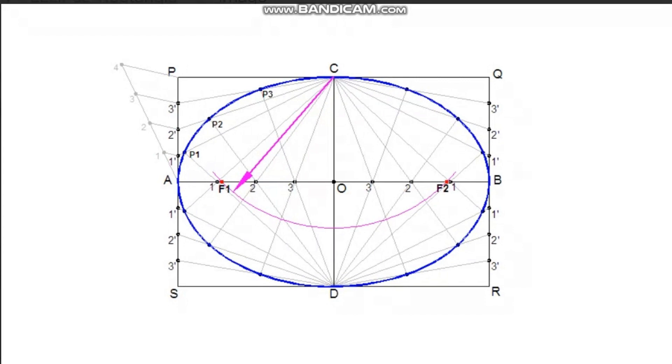Join these points to the point through which the tangent and normal is to be drawn. Draw a bisector line for this angle. This line is normal. A perpendicular line drawn to the normal is called tangent.